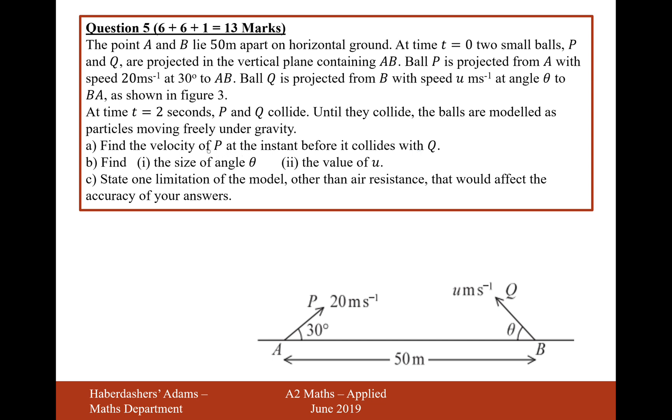We want to find the velocity of P, which means we're going to need an upward velocity and a downward velocity, or upward velocity and to the right velocity, and then we'll find the magnitude of that. We're just going to start by doing suvat in the vertical plane, suvat upwards.